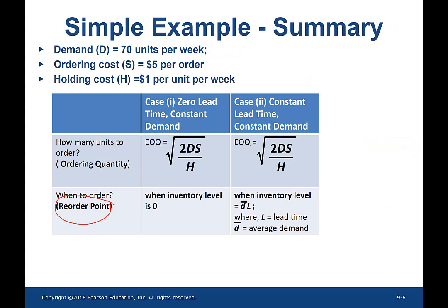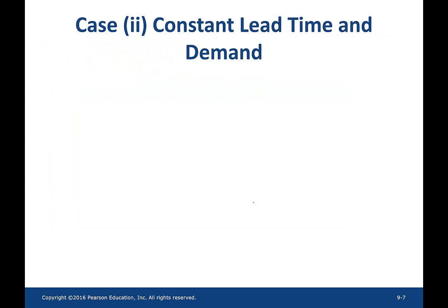The one thing that changes is the point at which the buyer places an order — that is, the reorder point. In case 1, when the inventory level is 0, the buyer places an order. However, in case 2, when the inventory level is equal to L times D-bar, the buyer places an order. So, when the lead time is constant, it becomes more difficult for the buyer to track the inventory position.